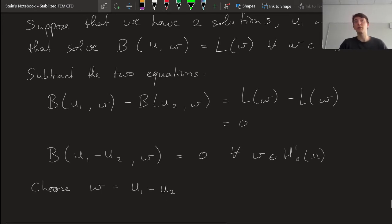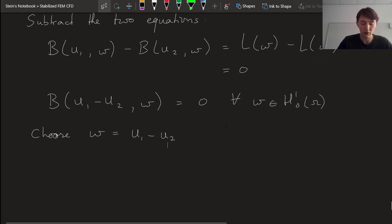H₁⁰ is a vector space, meaning that any linear combination of its elements is also an element, so that u₁ minus u₂ also has to be in H₁⁰, so that we can choose w to be equal to u₁ minus u₂.